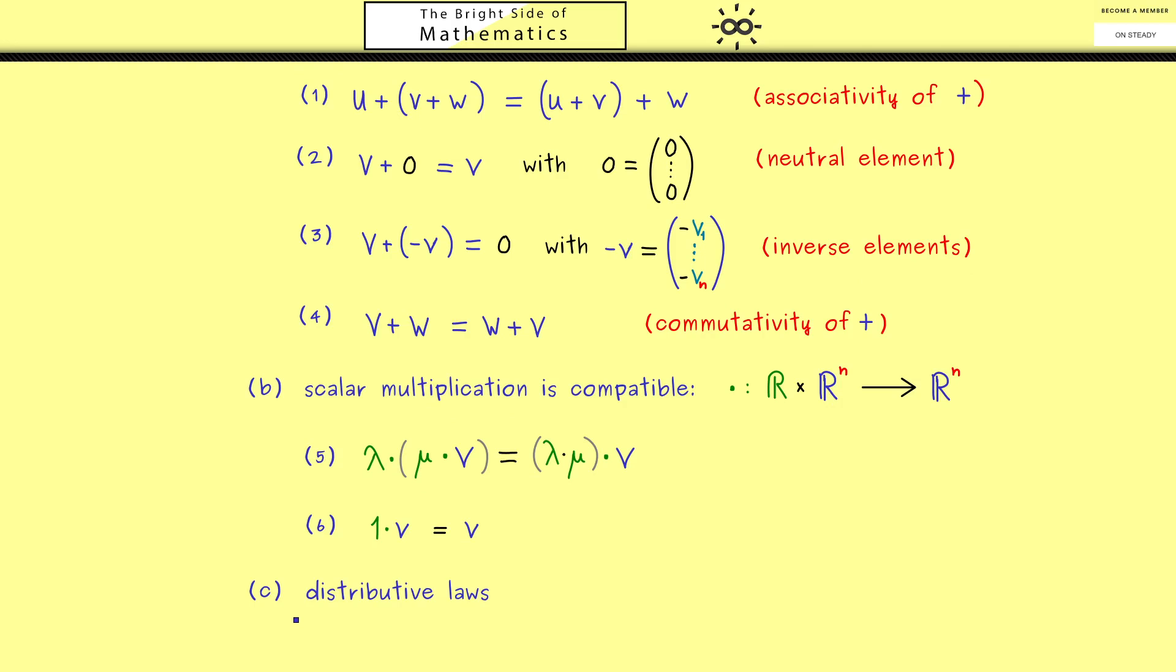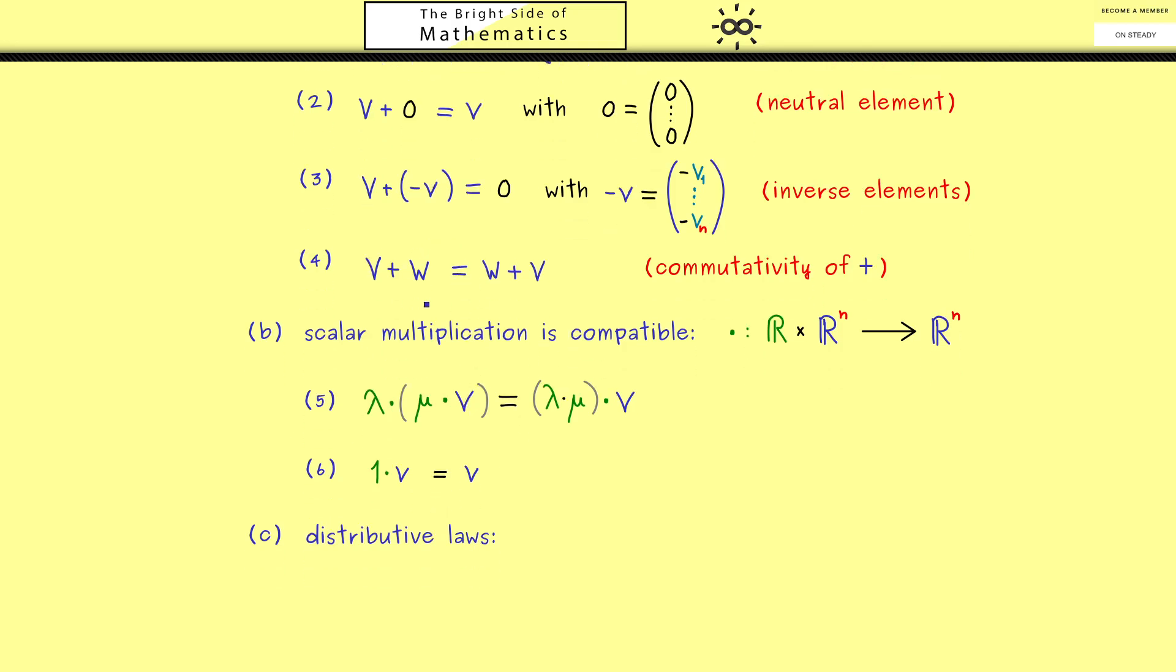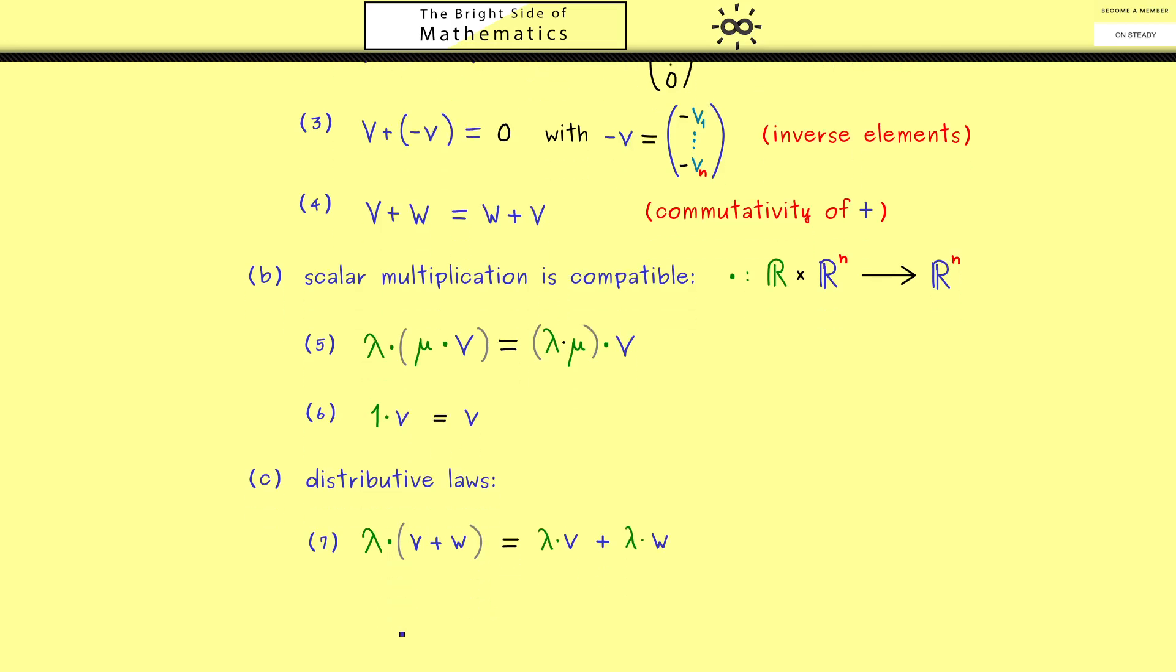Indeed they can be summarized as distributive laws. Hence this means now we connect the scalar multiplication with the addition. So property 7 says lambda times v plus w is the same as lambda times v plus lambda times w. So in summary first scaling then adding is the same as first adding and then scaling. And the same holds when we do it with the scalar factors. So when we first add our scalars lambda and mu in R, and use the resulting scalar for scaling a vector v, then this is the same as adding two scaled vectors v. More concretely it's equal to lambda times v plus mu times v. So you see this is how distributivity works.